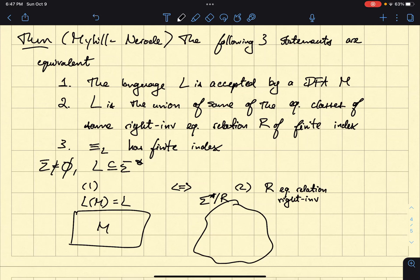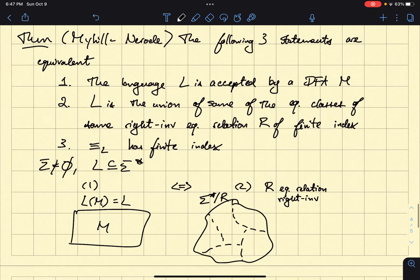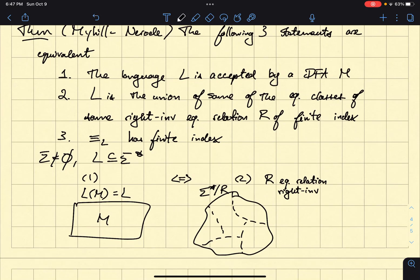And so these partitions might look like this. So these are the partitions that R creates with its equivalence relation, right? So these are the equivalence classes that partition sigma star. Okay. And R is also finite, right? It has a finite index, meaning that there's a finite number of equivalence classes here that make up sigma star. Okay.